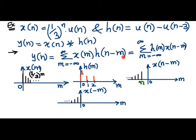In the present example, we start with sketching both the sequences first of all by changing the index of both sequences from small n to small m. In this example, let us keep the impulse response, which is basically a rectangular function, fixed.